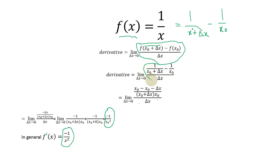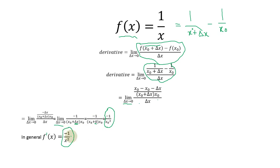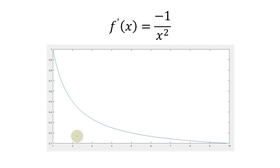One thing to note: throughout the simplification, we finally put delta x equal to zero to apply the limit — that is, we let delta x approach zero and substitute delta x equals zero. So the final answer is minus 1 over x naught squared, and in general we can say minus 1 over x squared for any point.